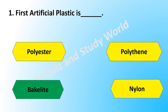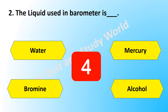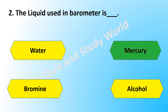The answer is bakelite. Which is the liquid used in a barometer? Is it water, mercury, bromine, or alcohol? The answer is mercury.